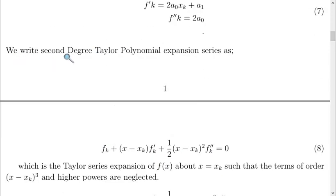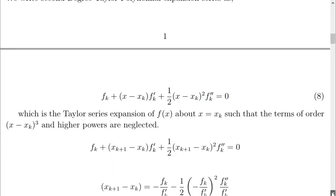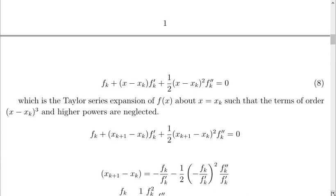We use the second degree Taylor polynomial expansion series as follows, which is this. You see that this is a second degree Taylor polynomial expansion series. We truncate order of three and higher powers, leaving it in this way as in equation eight.